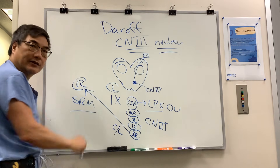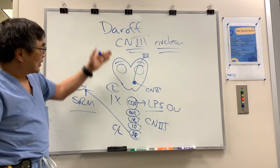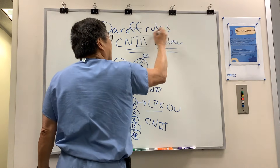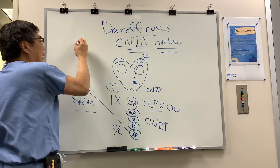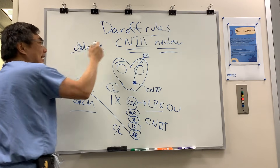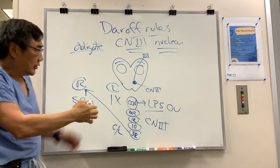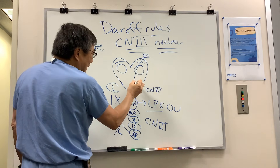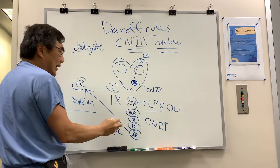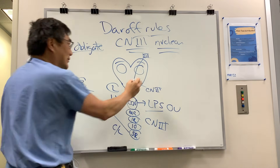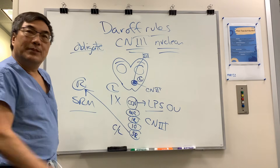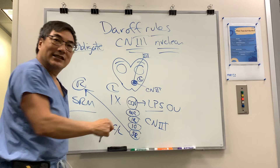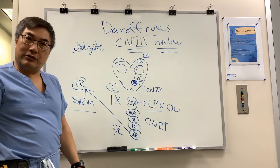The nucleus innervates the contralateral side, and therefore there are some rules that Dr. Daroff made for nuclear thirds. One of those rules defines what is an obligate nuclear lesion, which means it has to be nuclear. Given the anatomy we just described, what has to be nuclear is if you have a third nerve palsy with bilateral ptosis and the lesion is only on one side, because it is damaging this single central caudal nucleus — that is an obligate nuclear third nerve palsy.